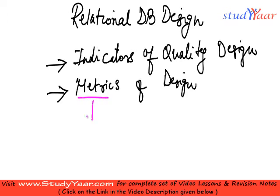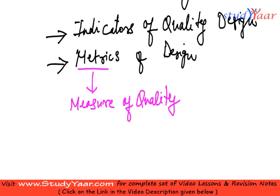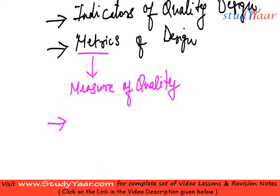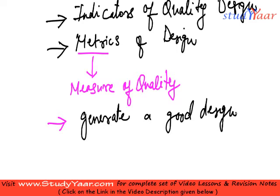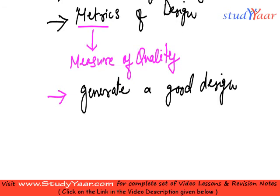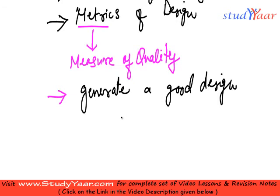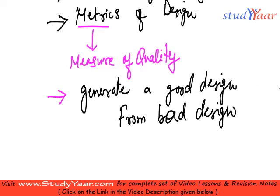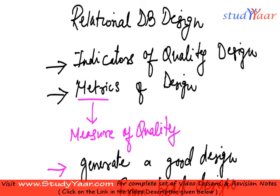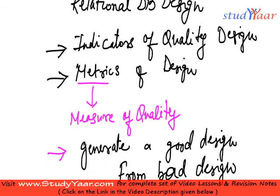Metric means a measure of quality. We are going to understand how to generate a good design from a bad design. First we will understand what a bad design is, and then we will understand how to transform a bad design into a good design. So these are the things that we are going to talk about in the session on relational database design.